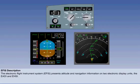The Electronic Flight Instruments System, or EFIS, presents attitude and navigation information on two electronic display units: the Attitude Director Indicator, or E-A-D-I, and the Horizontal Situation Indicator, or E-H-S-I.